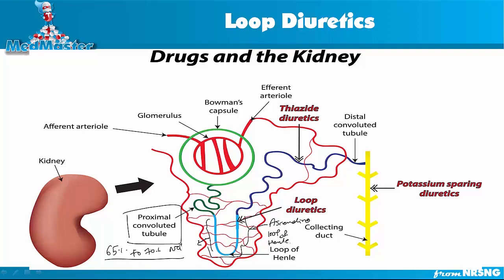We are interested in the ascending loop of Henle. In the ascending loop of Henle, there is a pump called Na+, K+, 2Cl-. This pump uses energy to reabsorb sodium, potassium, and chloride back into the blood. When sodium gets reabsorbed, water follows sodium, so water also gets reabsorbed in the ascending loop of Henle. About 25 percent of sodium gets reabsorbed here using this pump.